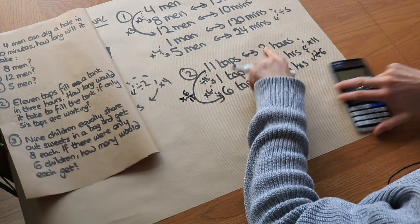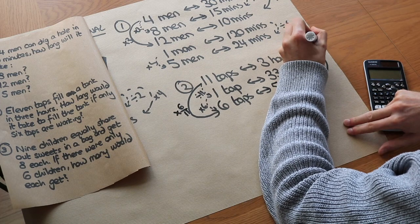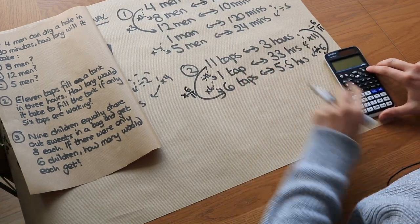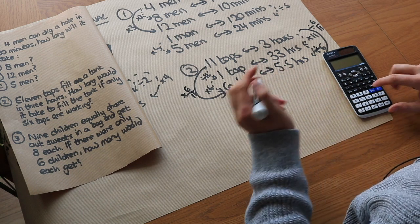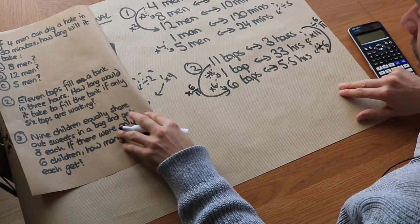And therefore, to get the amount of time, we do the opposite. We would divide by 6 elevenths. And if you do 3 divided by 6 elevenths, then you get 5.5 again. So it's up to you what method you use.